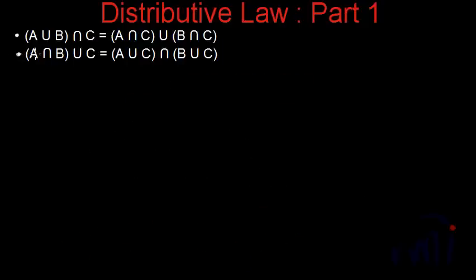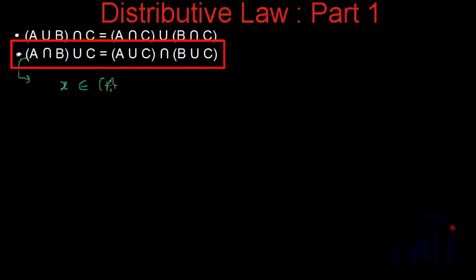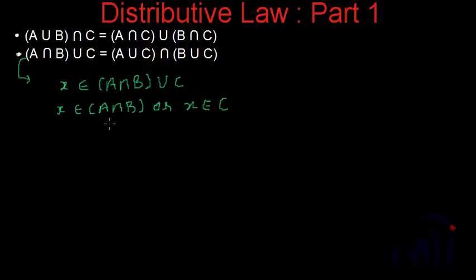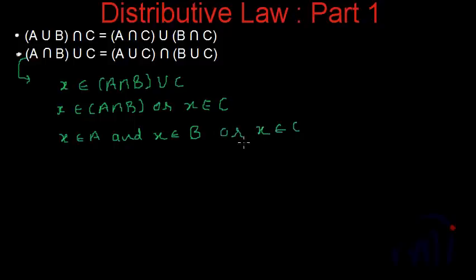Let me erase all this and now we will try to prove the second distributive law. Let's assume that X is an element of A intersection B union C — this is the left-hand side. From here we can say that X is an element of A intersection B or X is an element of C. Either one or both of these conditions can be true. If the left one is true, X will be an element of A and X will also be an element of B. If the right one is true, X will be an element of C.